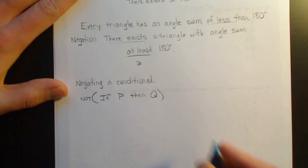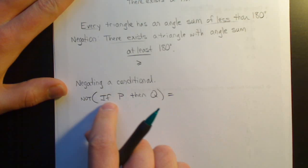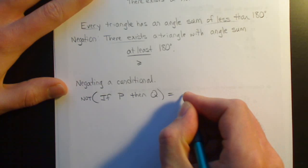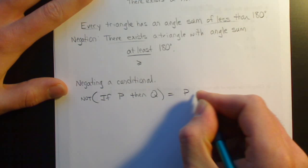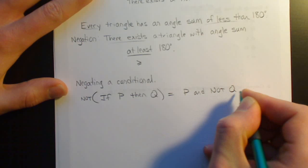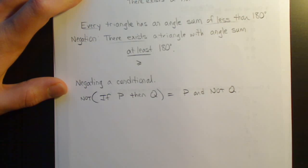To negate it, when you prove that P does not necessarily imply Q, the P is true, but Q doesn't have to be true. You find some instance where P is true, but Q is not.